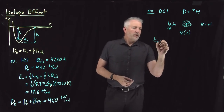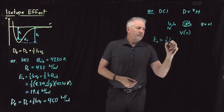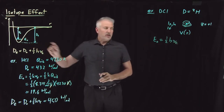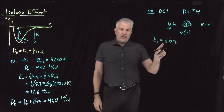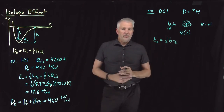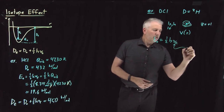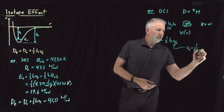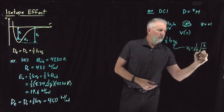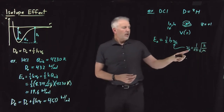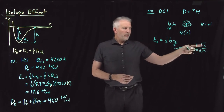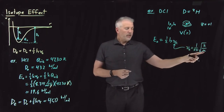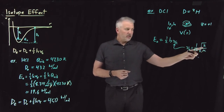However, if we think about the zero point energy — one half H nu — the height of the zero point energy does depend on the isotopic mass of this molecule. Because the frequency for a harmonic oscillator is 1 over 2π times the square root of the force constant divided by the reduced mass. So here's where the masses come into play.